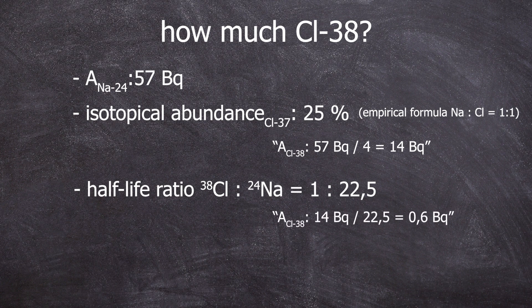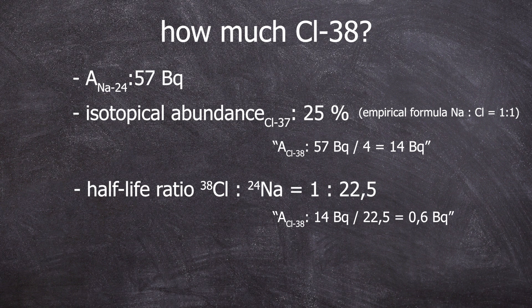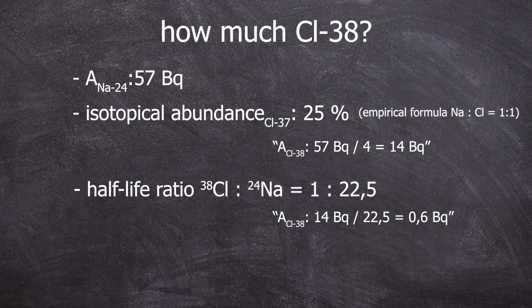So only 1/22.5 of the activity can be achieved. The gamma line's occurrence probability is 44% and 32%, not 99.99% like with the sodium.